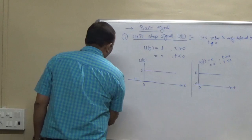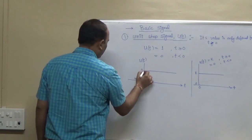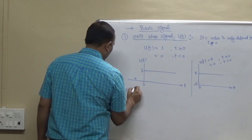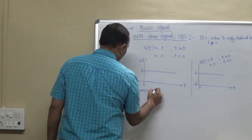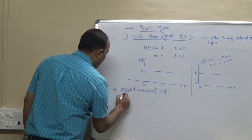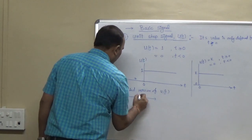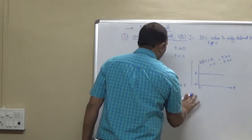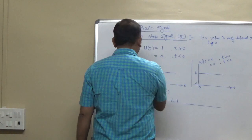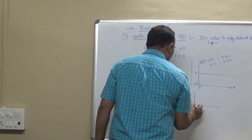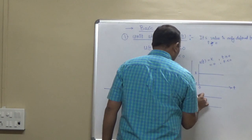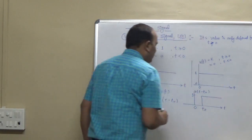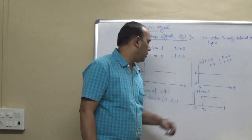If we apply shifting to u(t): the shifted version u(t - t0) — where t is replaced by t minus t0 — is a right shift, also called a delayed version. u(t) starts at 0, and u(t - t0) is shifted to the right side direction, starting at t0.